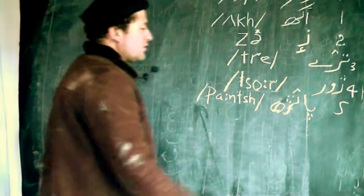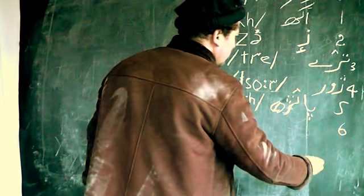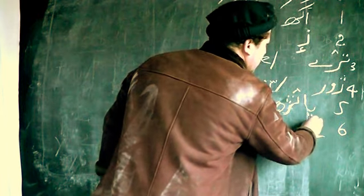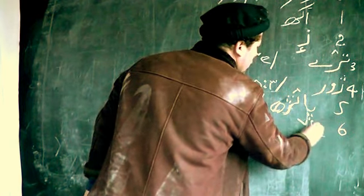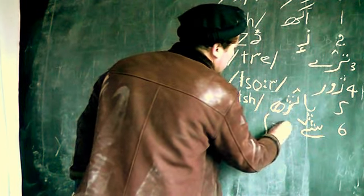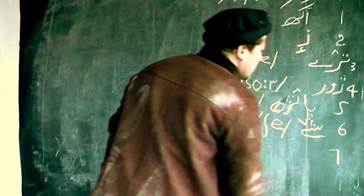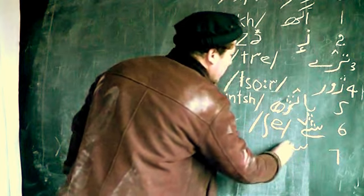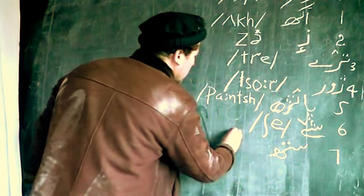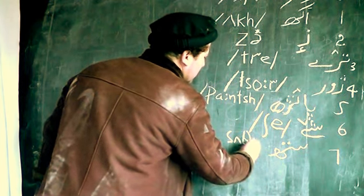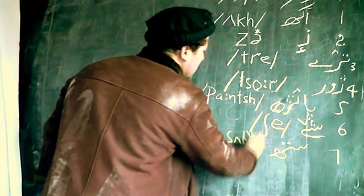Now, after this, we have six. We call it in Kashmiri 'Sh.' This is Sh — three dots — so this is Sh. And then we have seven, which is called 'Sat.' This is S, this is 'eh,' and this is 'th' — the aspirated bit. This is Sat.